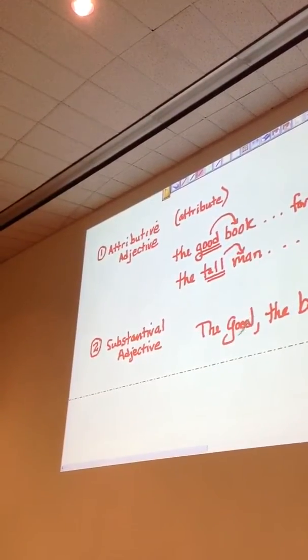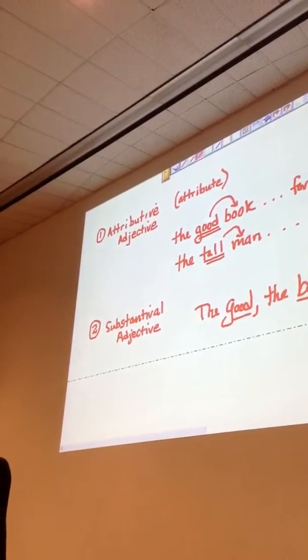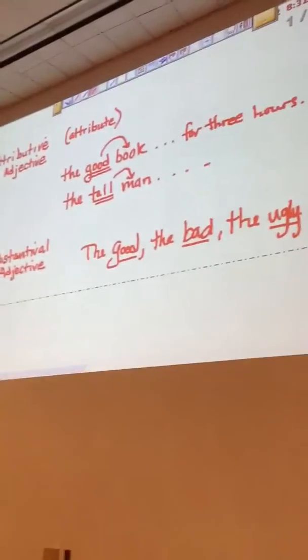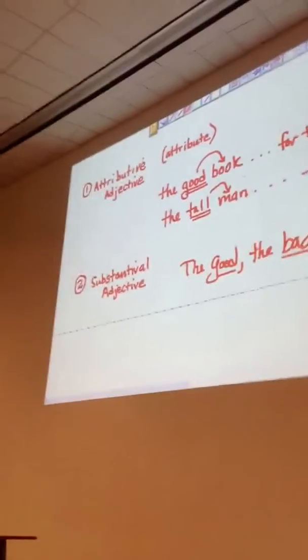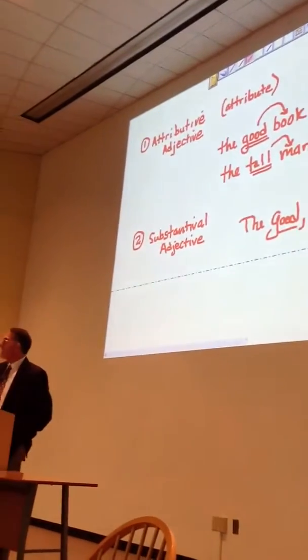But what do you have here? You have three adjectives, none of which has a noun to modify. The noun is kind of understood depending on context. It might be The Good Cowboy, The Bad Cowboy, and The Ugly Cowboy. Or it might be The Good People, The Bad People, and The Ugly People.